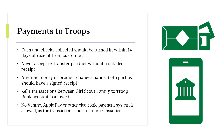Girl Scouts should turn in cash and checks to the coordinator within that 14-day window of receiving from customers. Troops can receive checks or cash only from Girl Scouts for the girl delivery orders. Zelle transactions between Girl Scout families to troop bank accounts is allowed. Please contact your bank if Zelle is allowed for your troop account. No Venmo, Apple Pay, or other electronic payment system is allowed for this transaction. Those transactions are not considered troop transactions, and therefore the troop has no rights to those funds transferred.